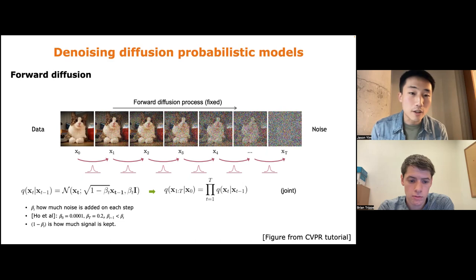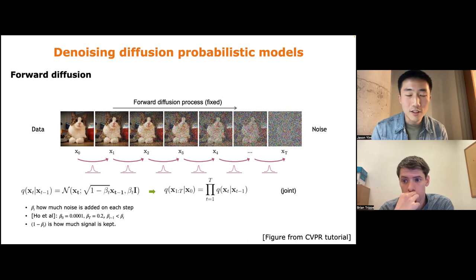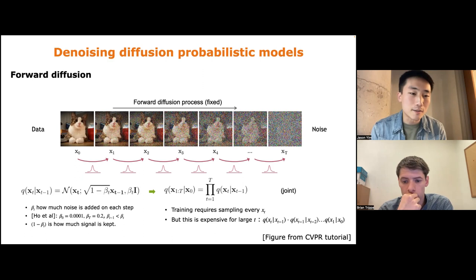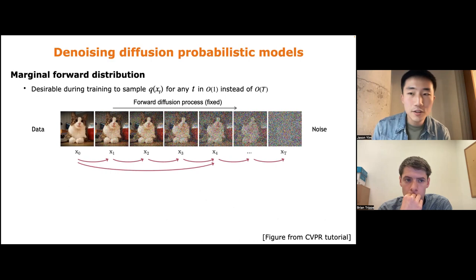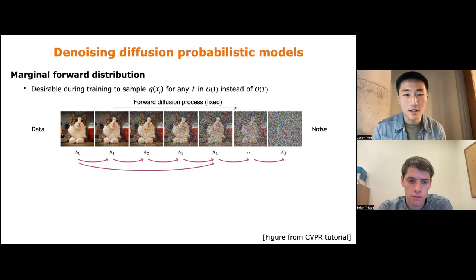For the forward diffusion process, we define a predefined number of steps T. Each step is parameterized by a transition kernel q(x_t | x_{t-1}), a normal distribution parameterized by beta_t, which defines how much noise is added at each step. Beta_t starts very small — about 0.0001 in the original Ho et al. paper — and increases toward the end. The factor sqrt(1 - beta_t) scales how much signal is kept. Since this is a Markov process, the joint distribution factors as a cumulative product of transition kernels. For training efficiency, we want to sample from any time step t in constant time rather than via ancestral sampling.